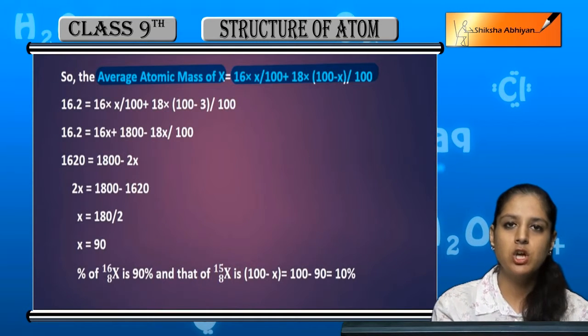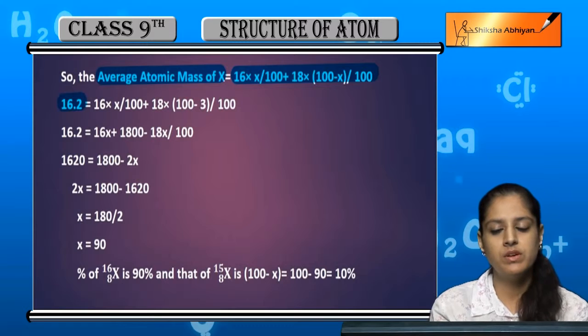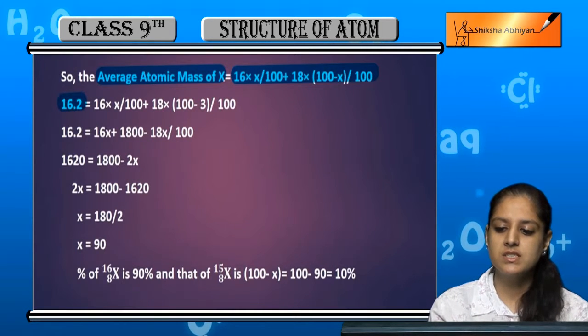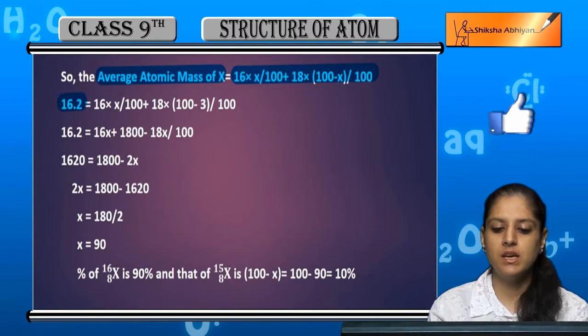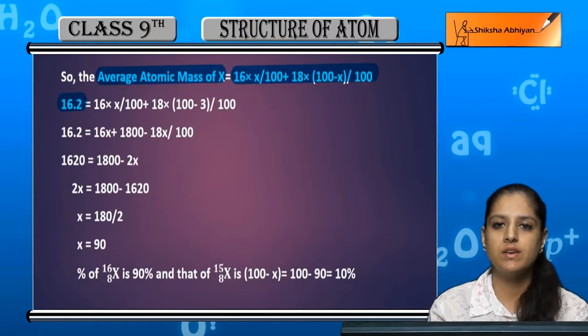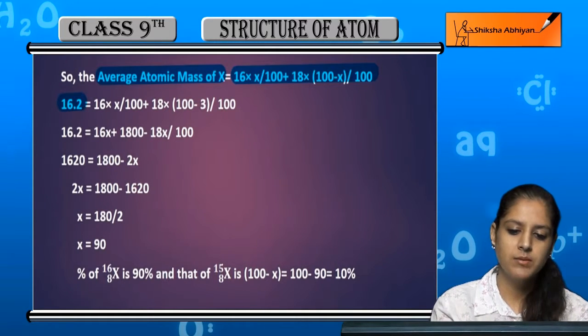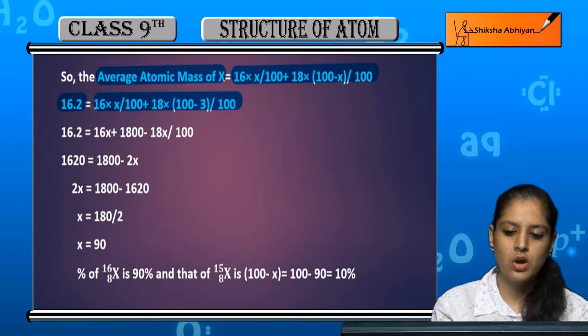The average atomic mass is given by 16.2. So 16 and 18 are the individual isotopes given. Now further solve this.